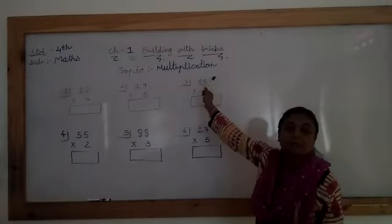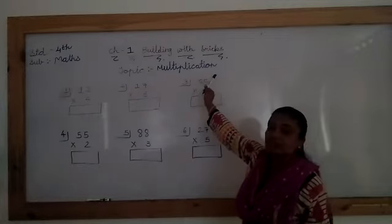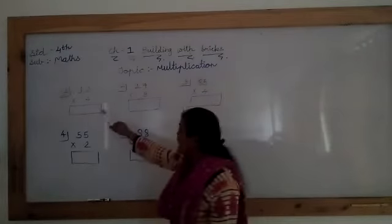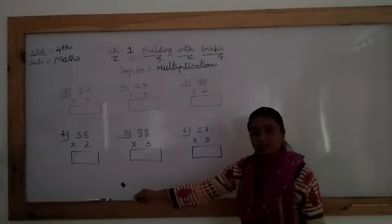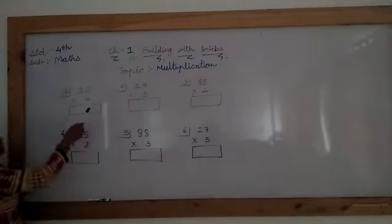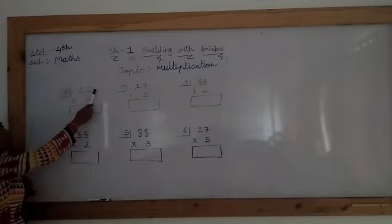Multiplication karne ke liye, sab se pehle aapko table aana deserve hai. If you don't know the table, so you do not solve the multiplication sums. So here I am writing 6 sums. So from first, I started 2 fours up. Here we have to do sum right side.